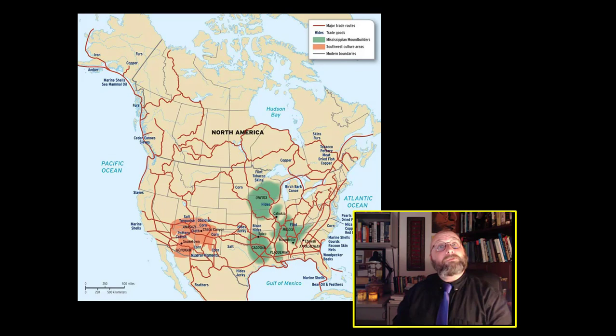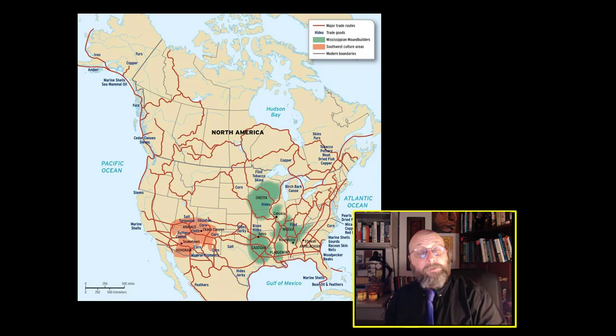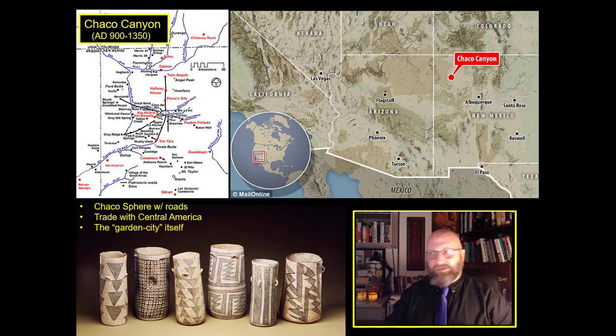While we do have these very complex societies of Central and South America, we also have fairly complex societies in North America. We've got several of them: Chaco Canyon, Cahokia, the Mississippian kingdoms, the Eastern Woodland groups. Let's start with Chaco Canyon — probably one of the more striking Native American civilizations that you can see, and certainly the ruins it left are extremely striking.